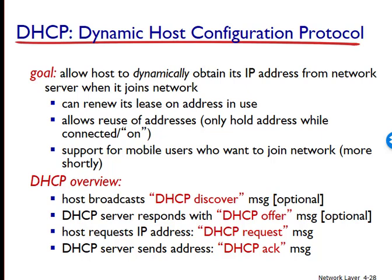DHCP is also useful in residential ISP access networks. Consider a residential ISP that has 2,000 customers, but no more than 400 customers are ever online at the same time. In this case, rather than needing a block of 2,048 addresses, a DHCP server that assigns addresses dynamically needs only a block of 512 addresses. As the hosts join and leave, the DHCP server needs to update its list of available IP addresses. Each time a host joins, the DHCP server allocates an arbitrary address from its current pool of available addresses, and each time a host leaves, its address is returned to the pool.